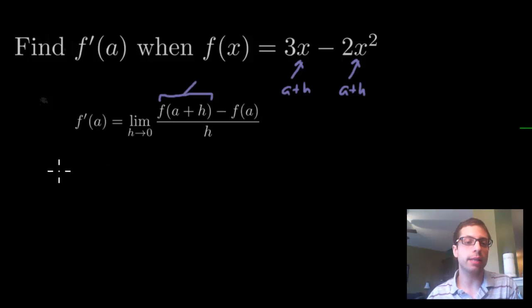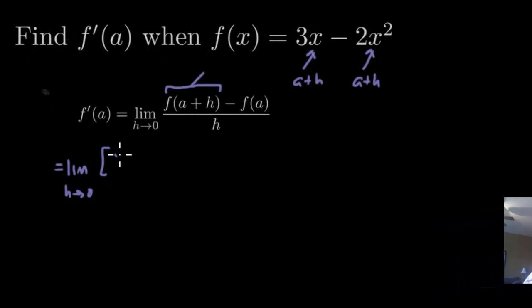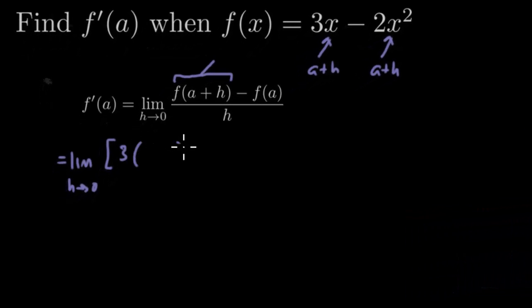So let's go ahead and do that now. We're going to have the limit as h goes to 0. Don't forget the limit. You're going to have f of a plus h. That's going to be 3 times, but now instead of x, it's supposed to be a plus h. And then you have minus 2 times, now instead of x squared, it's going to be a plus h squared.